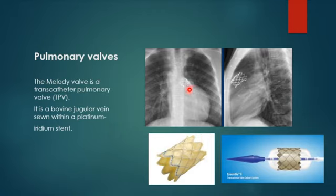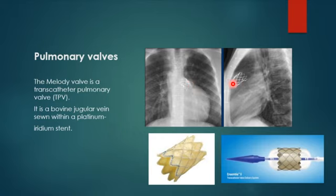The pulmonary valve is the most superior and most superficial. A specific type for the pulmonary valve is called the bovine or Melody valve, made from a cow jugular vein sewn within a metallic platinum-iridium stent. It is located at the site of the pulmonary trunk and is inserted via transcatheter technique — a minimally invasive approach compared to the sternotomy required for others.